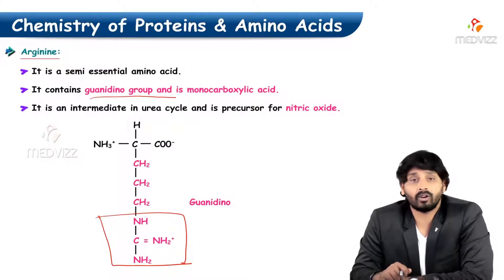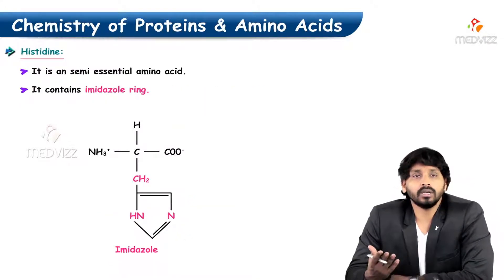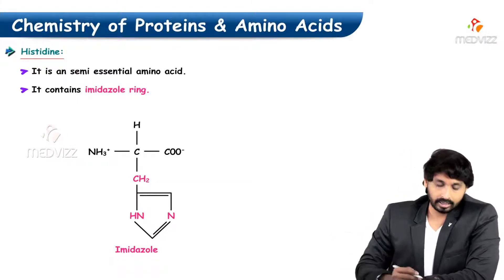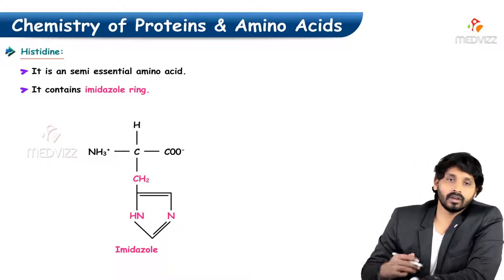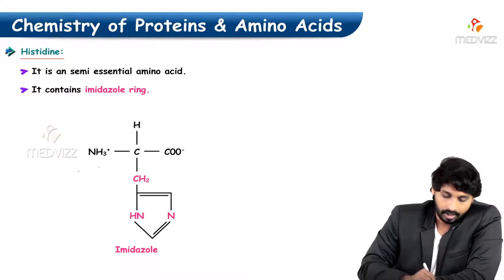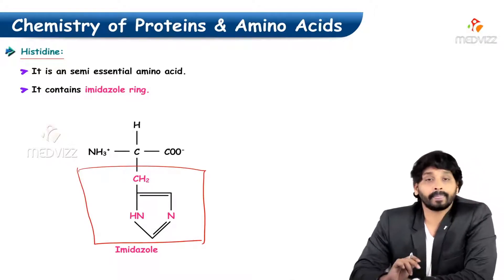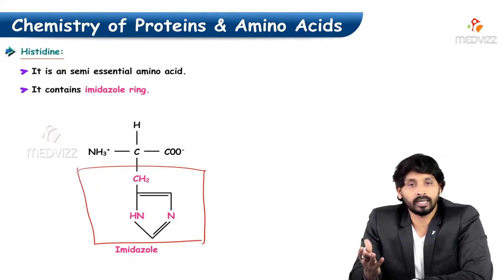Histidine is also a semi-essential amino acid. It contains an imidazole ring — unlike a linear chain, the extra amino groups are linked within this ring structure, which is called the imidazole ring.